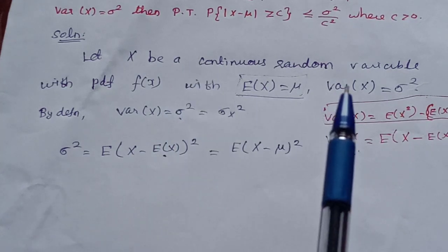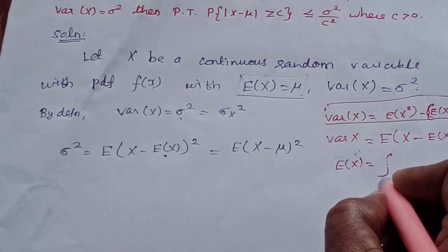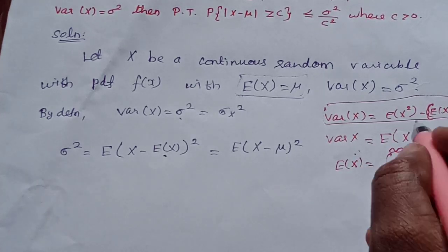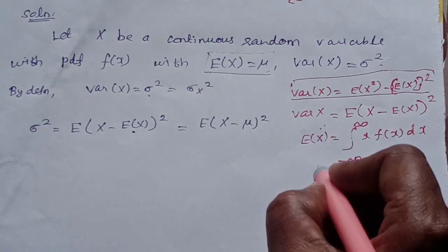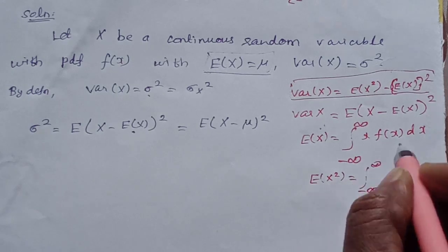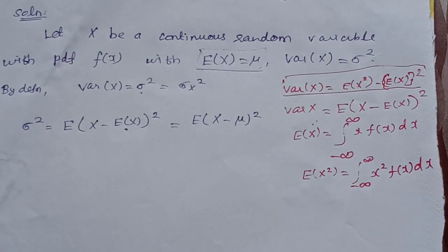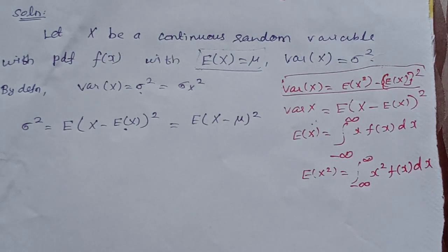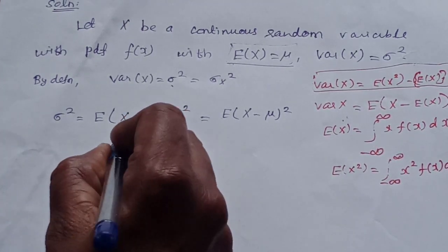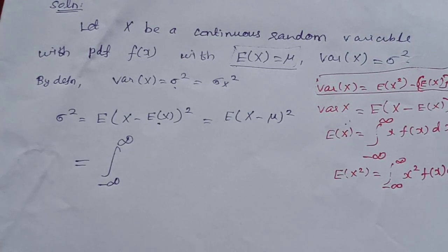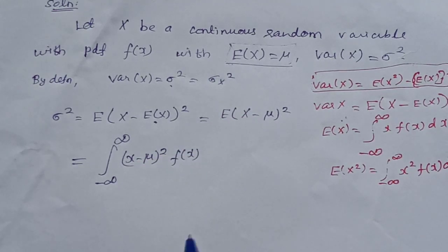For a continuous random variable, E of (X minus mu) whole square is written as the integral from minus infinity to plus infinity of (x minus mu) squared times the probability density function f(x) dx. So sigma squared equals the integral from minus infinity to plus infinity of (x minus mu)² f(x) dx.